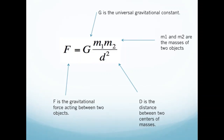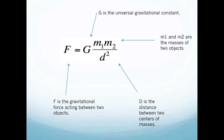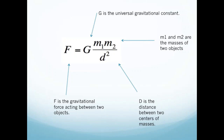Back to the formula — in other words, the larger the masses, the larger the gravitational force between the objects. Also, the further away you go from the object, the weaker the gravitational pull between the two objects is.